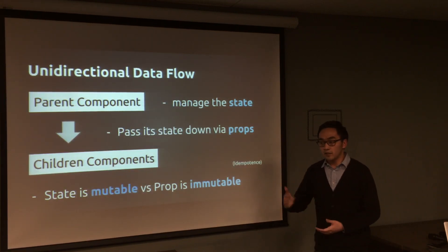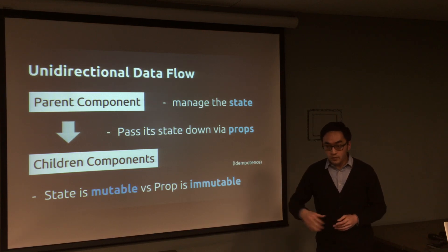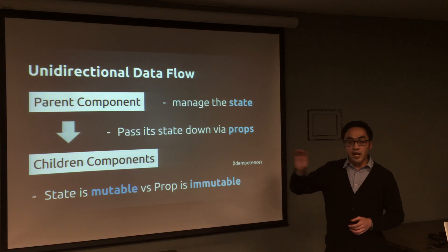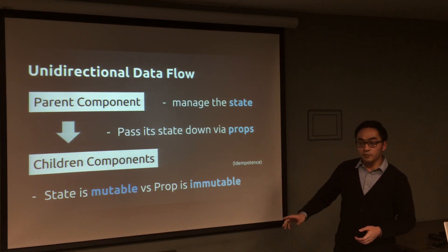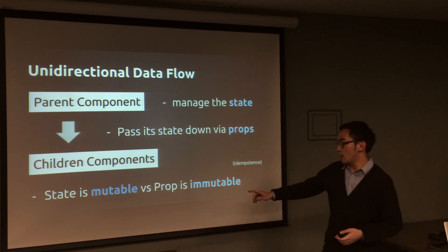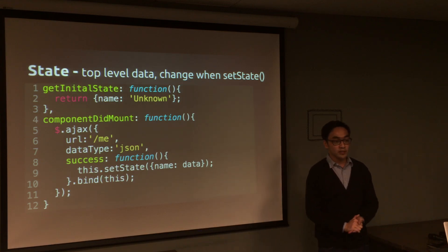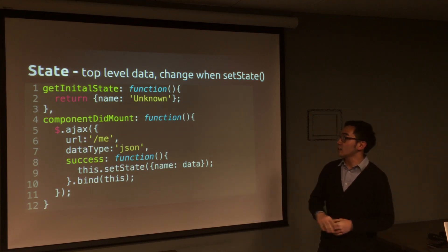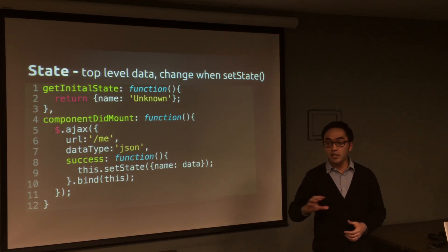React thinks differently. It's not doing dirty checking — it does one-way data flow. The parent component manages the state, and data is passed down to children via props. The children can have more children as a hierarchy. One important thing to remember: state is mutable while props is immutable. Props stands for properties.